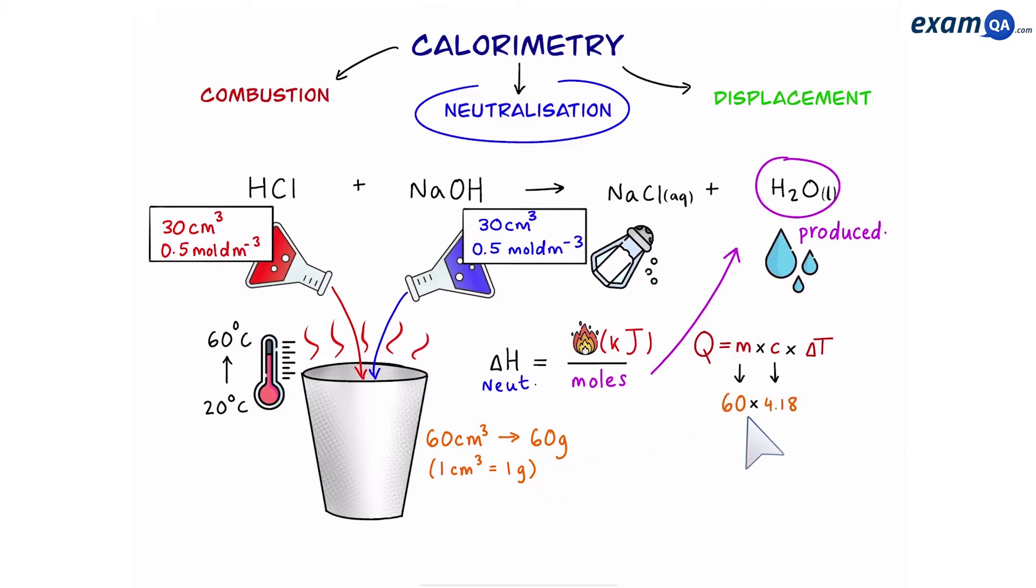Now c stands for the specific heat capacity of water. This is usually given to you in the question and it's around 4.18. Then we're going to times it by the temperature change. So that's from 20 to 60 which is 40. This gives us 10,032 joules. However since we want this in kilojoules we're going to divide by a thousand.